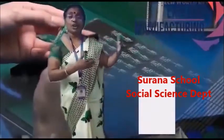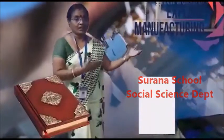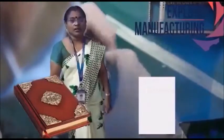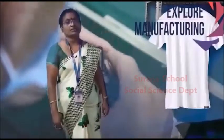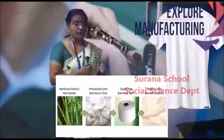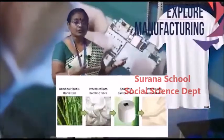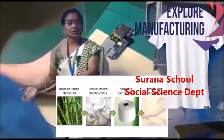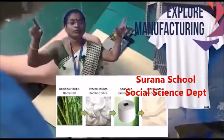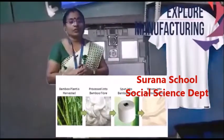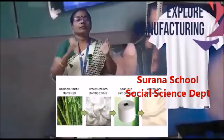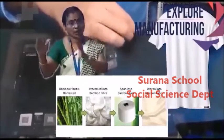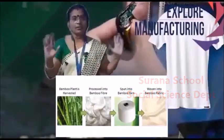For example, pulp is changed into paper, then the paper is changed into a notebook. Similarly, cotton is cultivated in the field and subjected to various processes in factories or industries, and the final product we use is the shirt. Usually, the finished product has more value and utility than the raw materials.